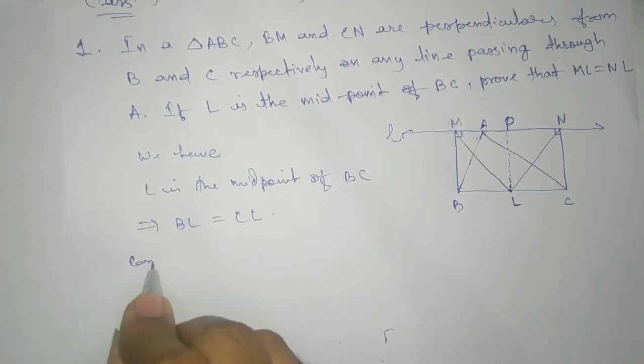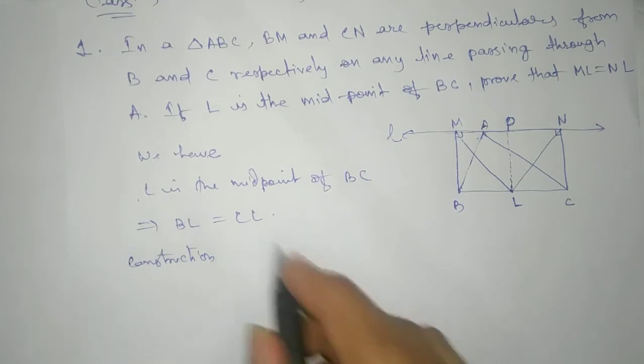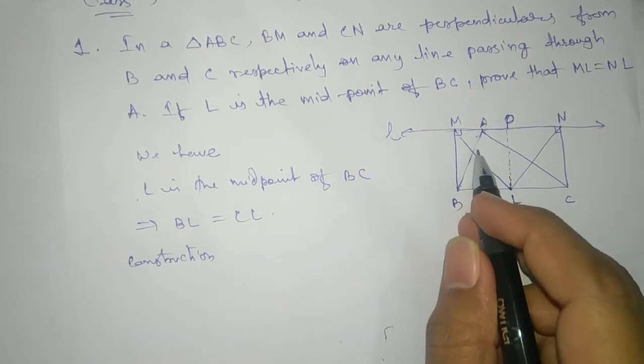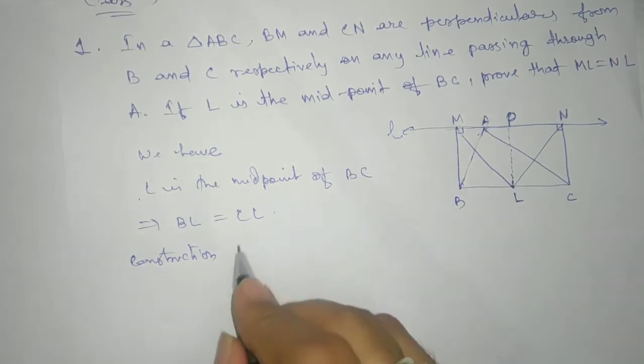This means BL equals to CL. Now construction. It is given here and they are perpendicular, this is also given. You can write, but here we have already drawn the diagram so no need to write.